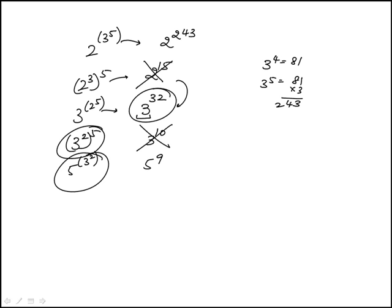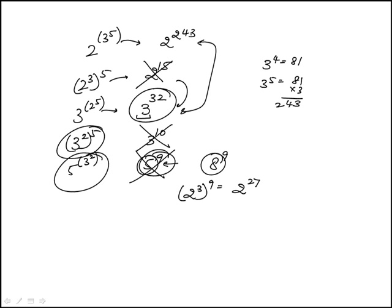So here we know that 5 to the 9 is going to be smaller than either one of these. Because even if we were to replace 5 with 8, 8 to the 9, we know 8 is 2 cubed. This would only be 2 to the 27, so clearly that's smaller than 2 to the 43.